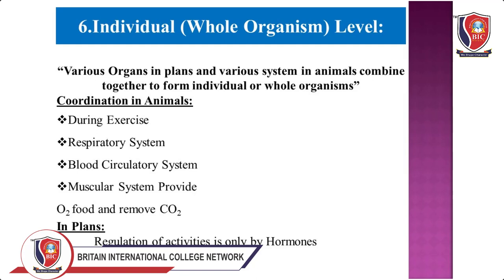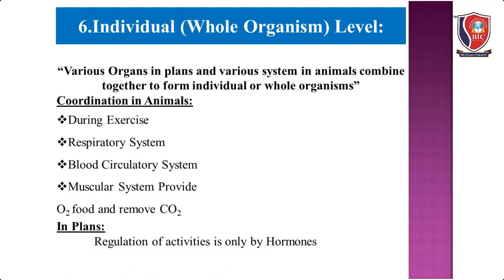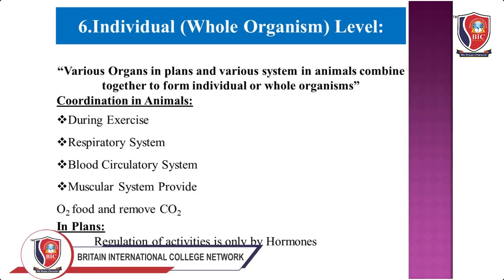Various organs in plants and various systems in animals together form the whole organism level. In animals, coordination occurs during activities like exercise — the blood circulatory system, muscular system, and respiratory system work together to provide oxygen and release energy. In plants, coordination is performed only by hormones.